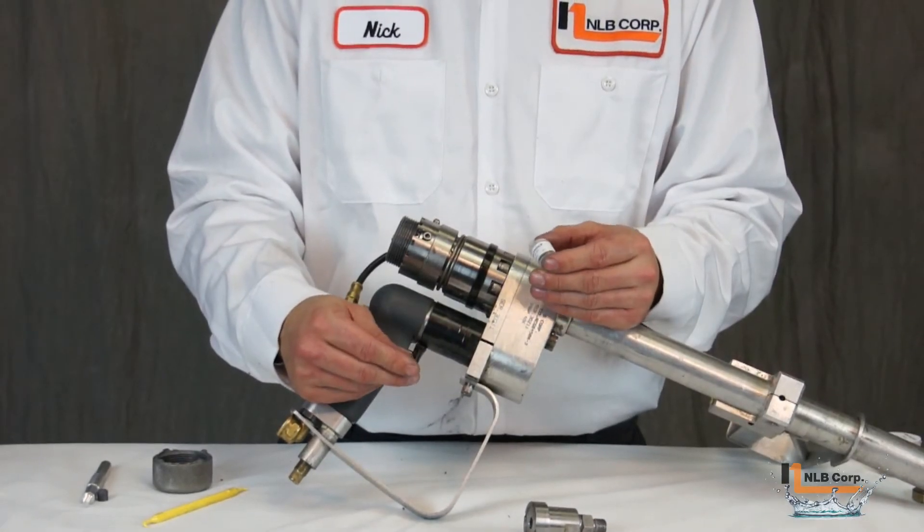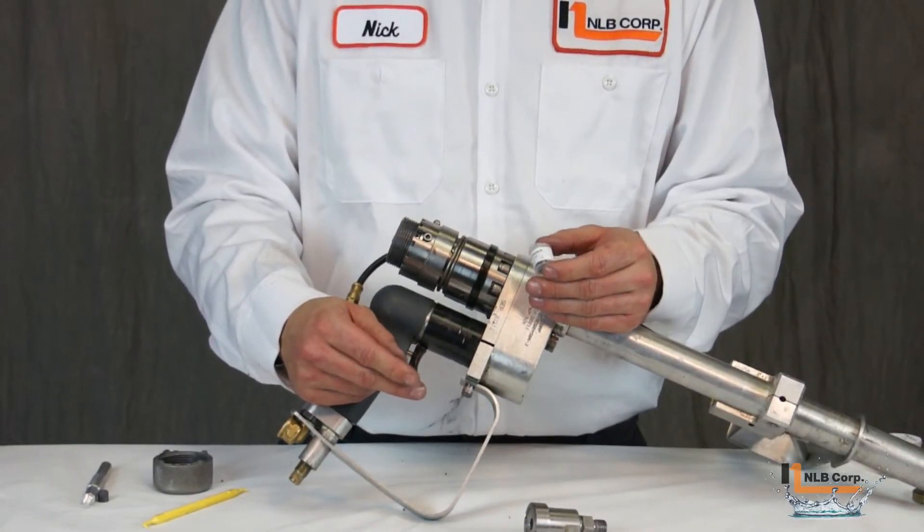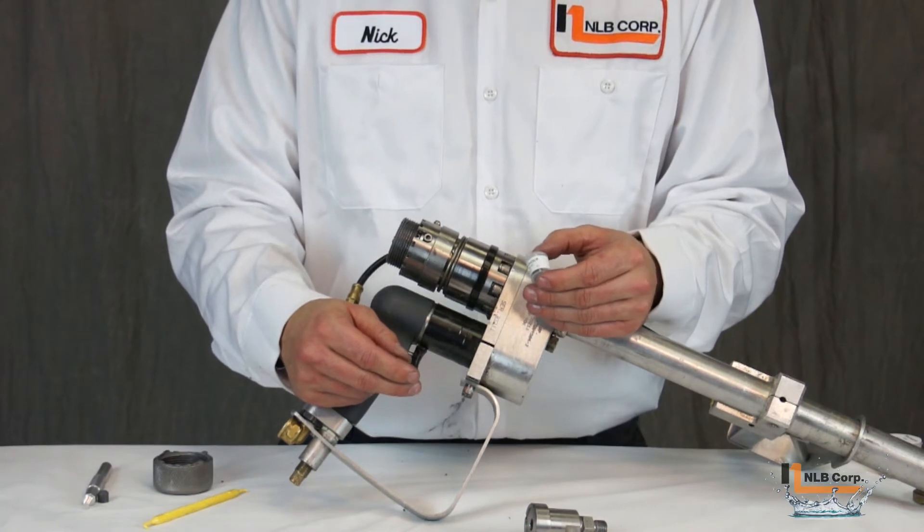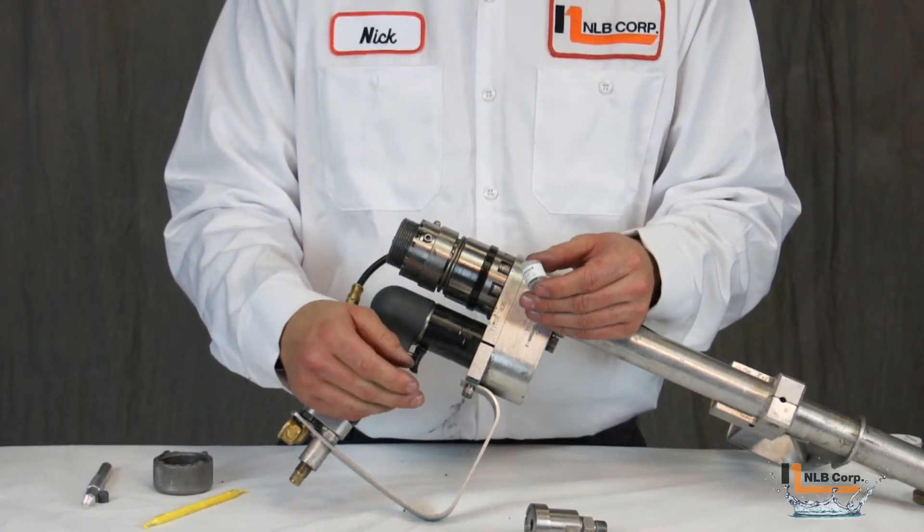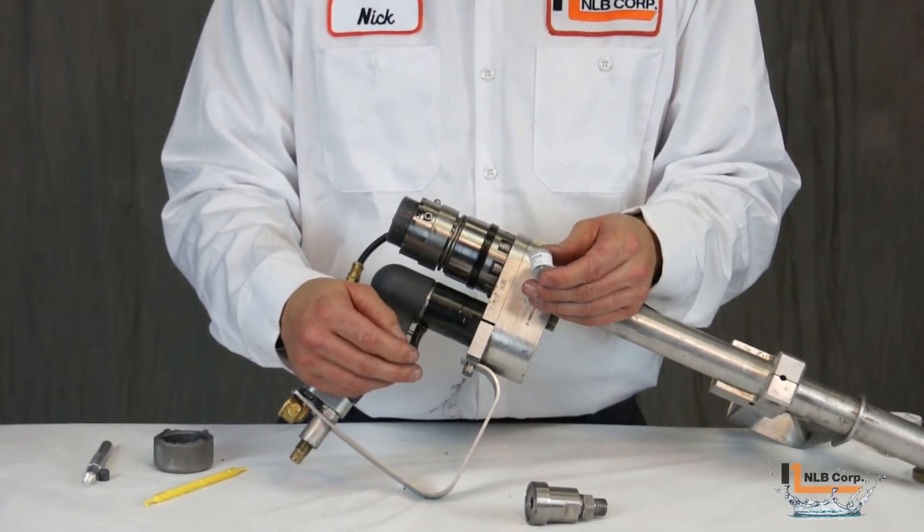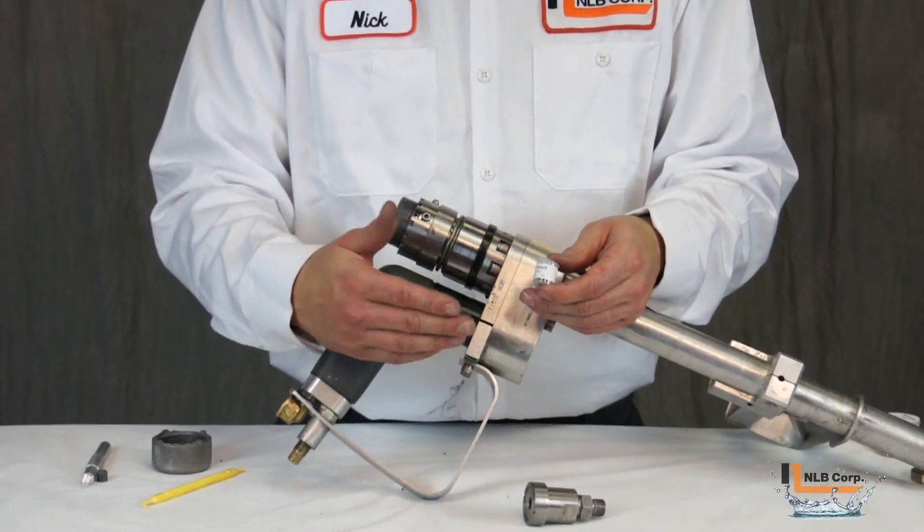Before you handle the new high pressure seal, clean your hands thoroughly. Any residual oils that may transfer from your hands to the seal can cause the seal to spin inside the housing, leading to premature seal failure.